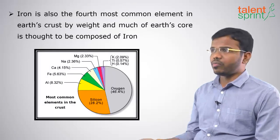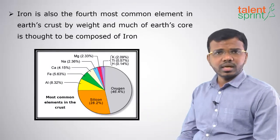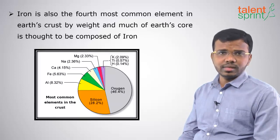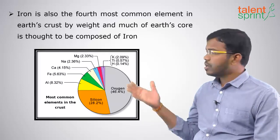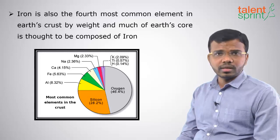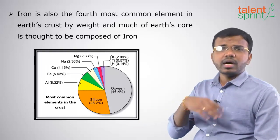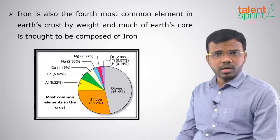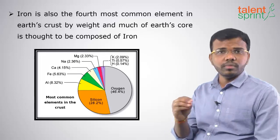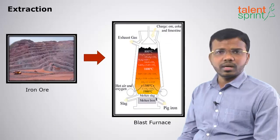Iron is the fourth most abundant element in the earth's crust — oxygen is highest, second is silicon, third is aluminium, and fourth is iron. Out of metals only, iron is the most abundant element.